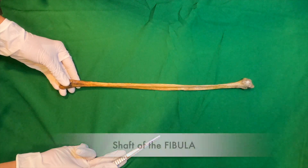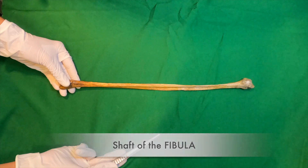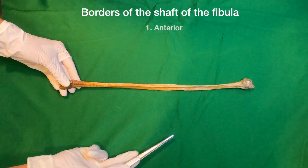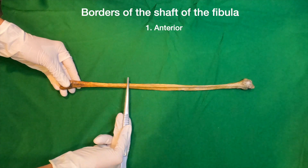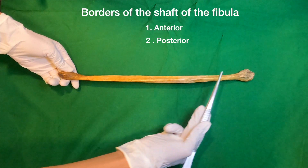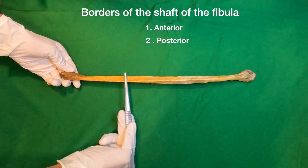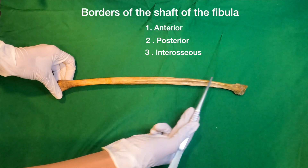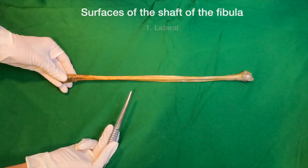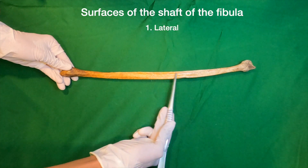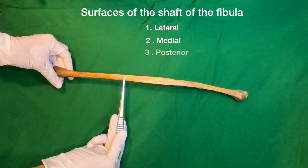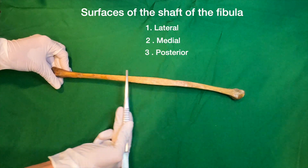Let's talk about the shaft. The shaft of the fibula has three borders which are anterior, posterior, and interosseous, and three surfaces named lateral, medial, and posterior, which lie in between these borders.